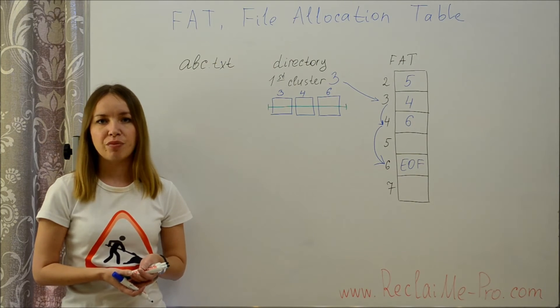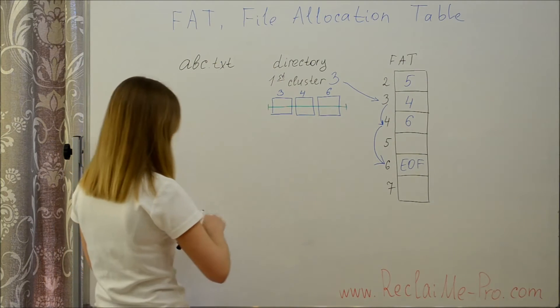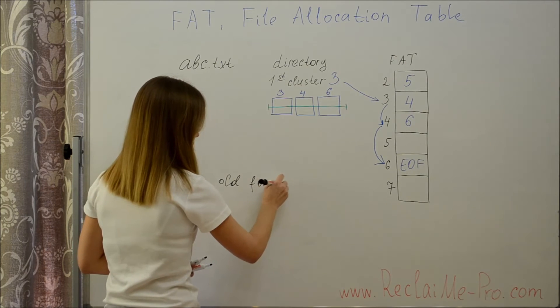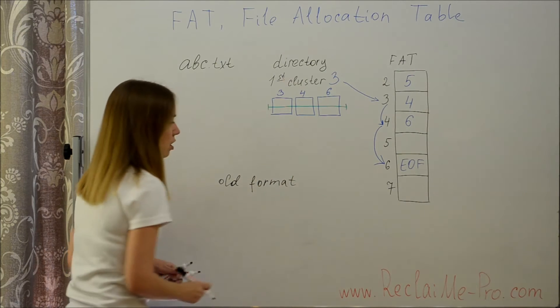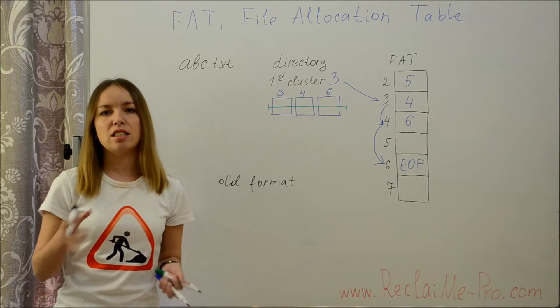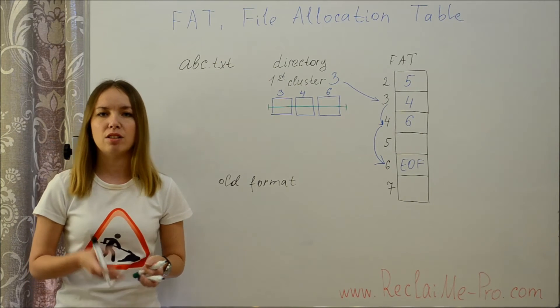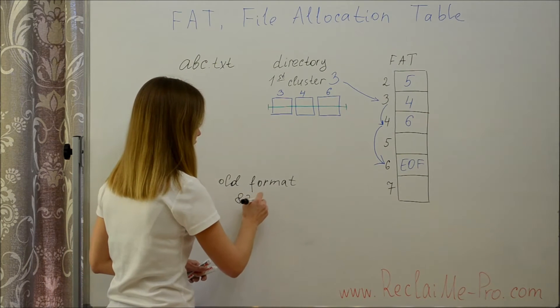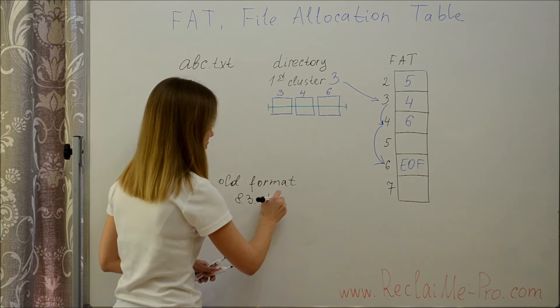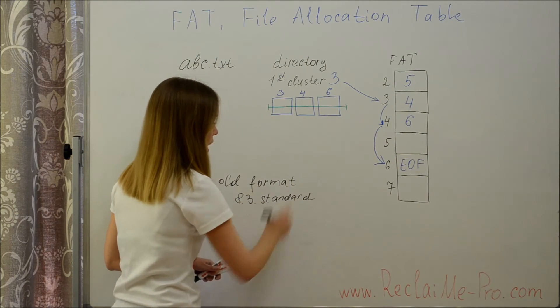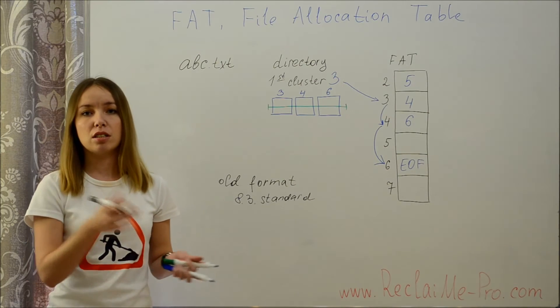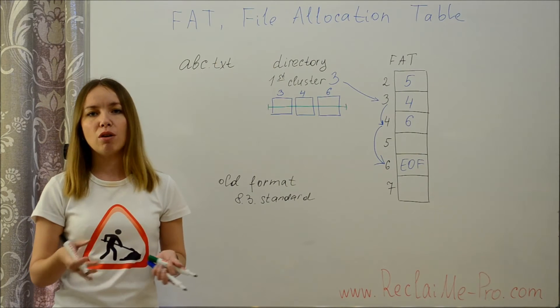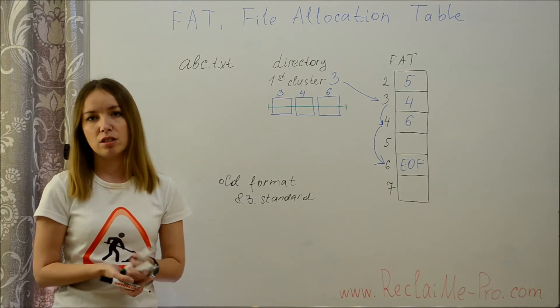Additionally, in 1995 the format of the element was expanded, and now there are two versions of a directory entry. Within the old format, a directory entry contains 8 symbols for file name and 3 symbols for file extension. This is called 8.3 standard. File names shorter than 8 symbols are padded with spaces up to 8. File names longer than 8 symbols are not allowed.